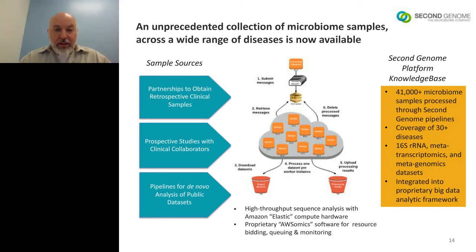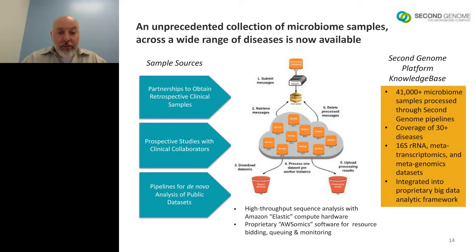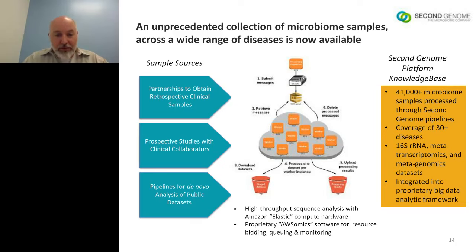There's substantial public data already available that you should reflect your data against. Our sample sources include partnerships, retrospective clinical samples, prospective ongoing studies, and public datasets. Our cloud has many workers; data comes in, gets queued, workers pick it up, process it under a set protocol, and deposit results back into our Amazon S3 buckets. Buckets are inexpensive, on-demand storage — you're not paying for hard drives, just storing data as needed — and from there data moves into a database for queries.